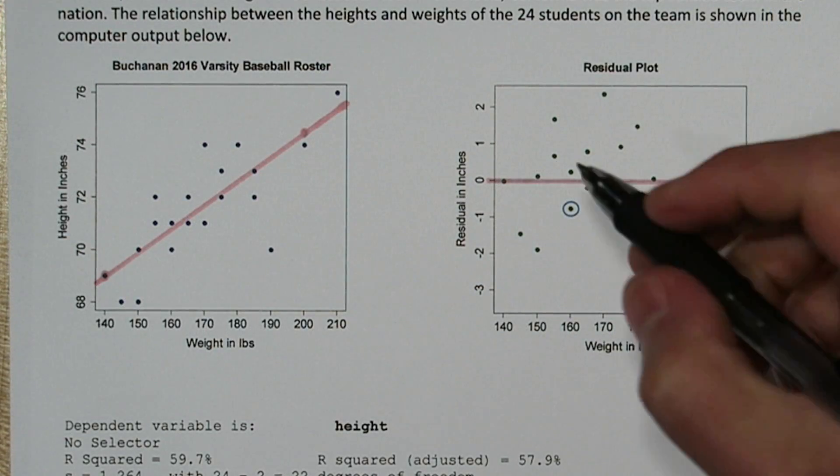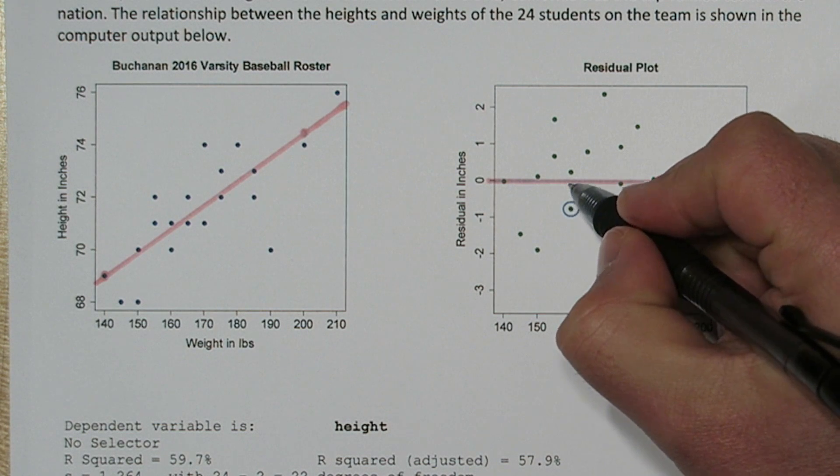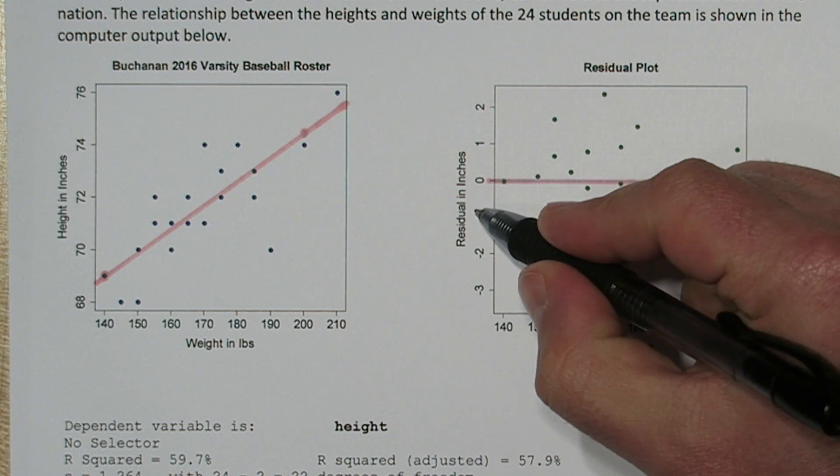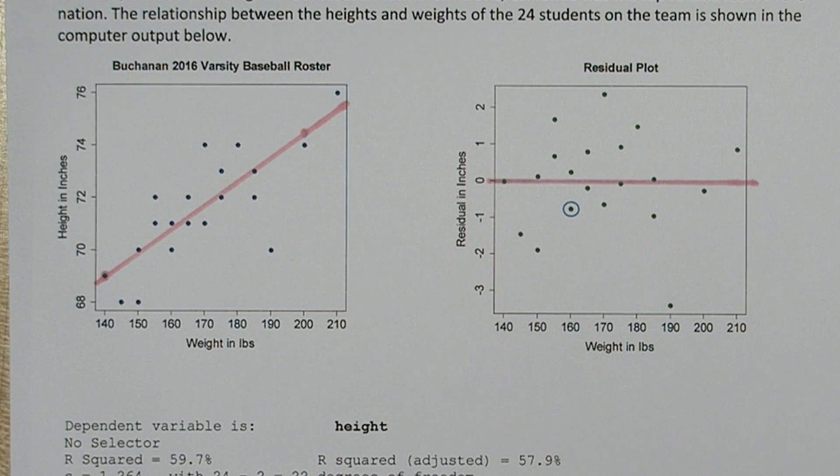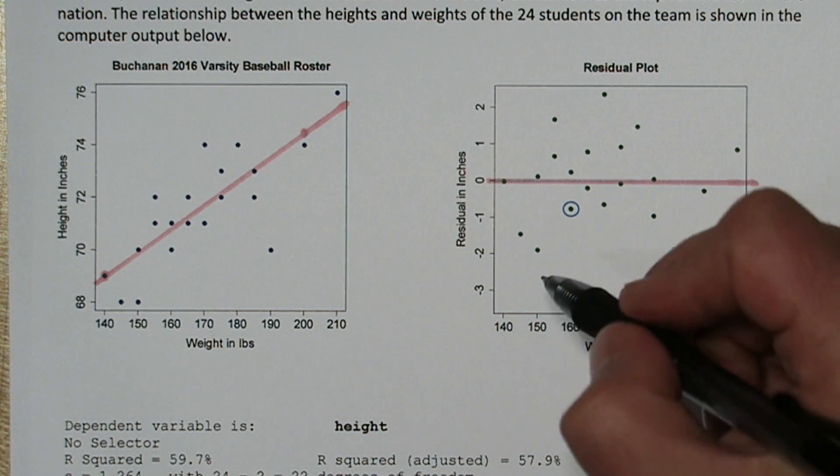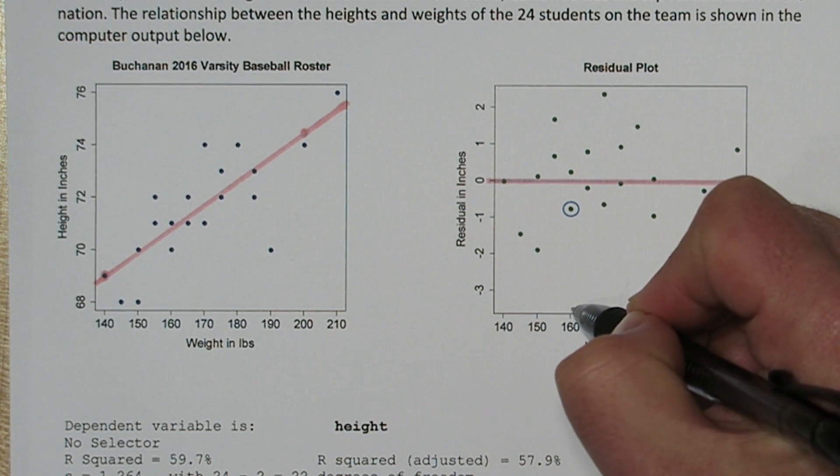Now in the residual plot, we have this one circled value, and we can see it has a negative residual of almost negative 1. That means our model over-predicted this particular player's height by almost 1 inch. We also know this player's weight was 160.